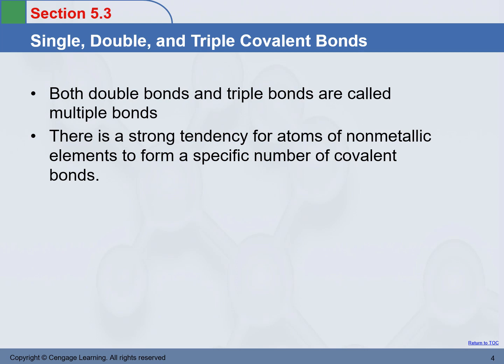Here, for covalent bonds, again, the goal for atoms to share electrons is to get eight electrons in their outermost shell. So they will keep sharing until the octet rule is satisfied. Because of that, each atom tends to share a specific number of pairs of electrons in order to get eight.